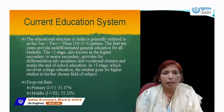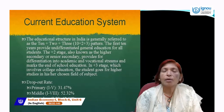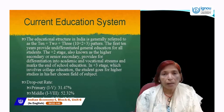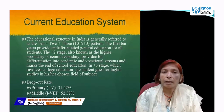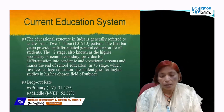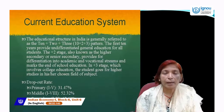Students get admission in 10+2 and 10+2+3, but in between their education they drop out due to family problems and other issues. That's why in India, the number of educated people is less compared to developed nations, and 40% of people are still illiterate.